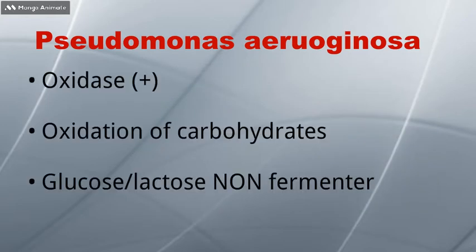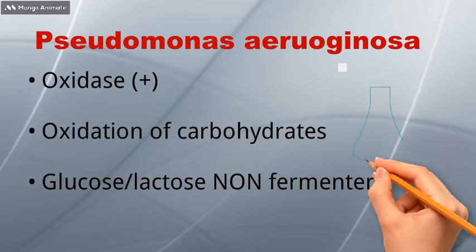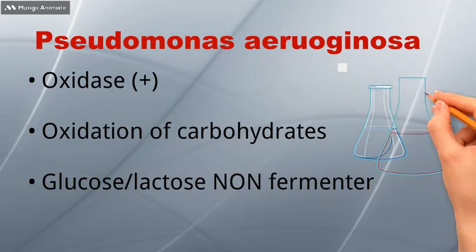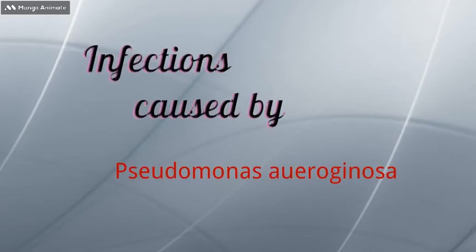Pseudomonas is oxidase positive. It differs from Enterobacteriaceae because it derives energy from oxidation of carbohydrates, not by fermentation. Aeruginosa is a glucose and lactose non-fermenter.